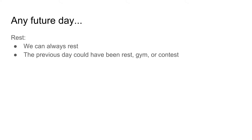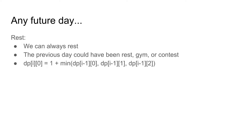Now let's consider any future day. First, we can always choose to rest. If we rest, the previous day could have been rest, gym, or contest. So dp[i][0] = 1 + min(dp[i-1][0], dp[i-1][1], dp[i-1][2]). We add 1 because we are resting on the current day, and we take the minimum over all previous states because we are trying to minimize the number of rest days.